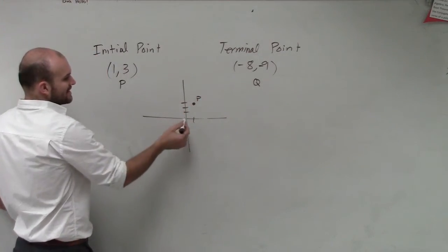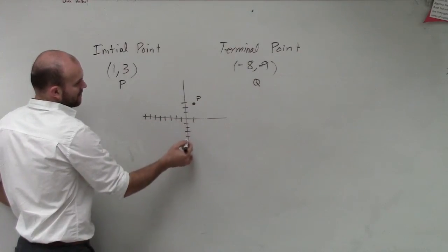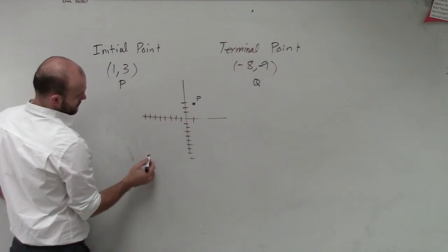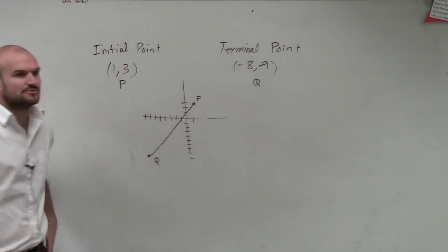And my terminal point is at negative 8, negative 9. So that's what our vector looks like.